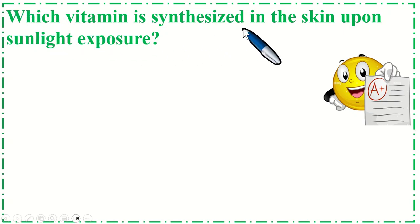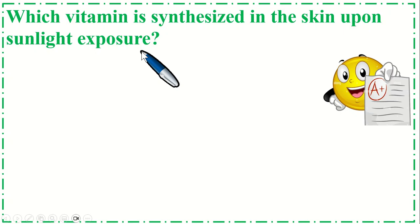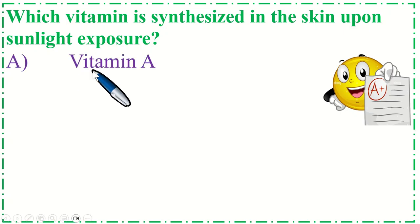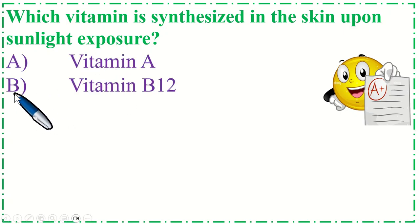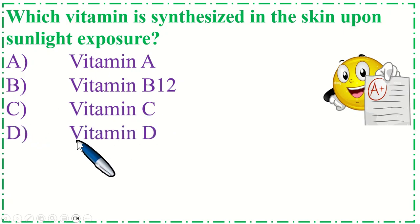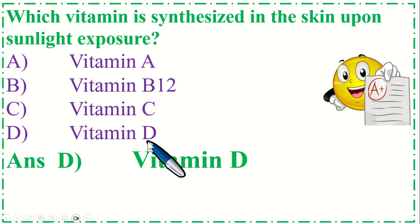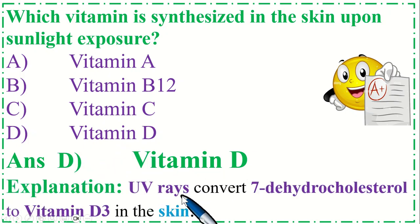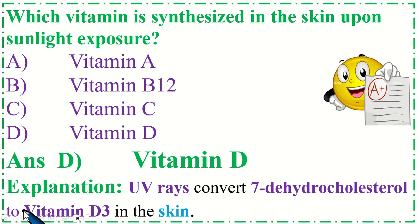Which vitamin is synthesized in the skin upon sunlight exposure? Option A: Vitamin A, B: Vitamin B12, C: Vitamin C, and Option D: Vitamin D. The correct option is D, Vitamin D. UV rays convert 7-dehydrocholesterol to Vitamin D3 in the skin.